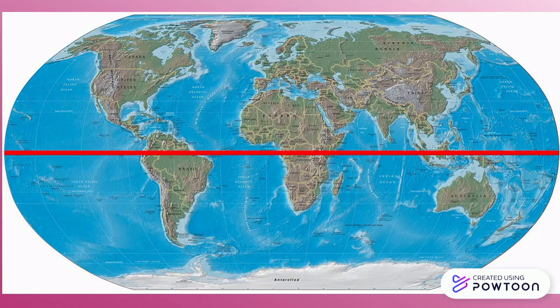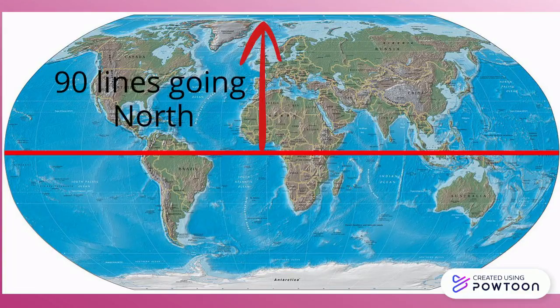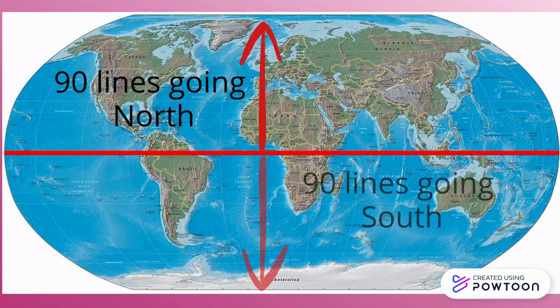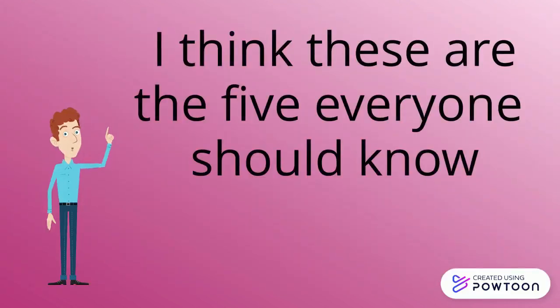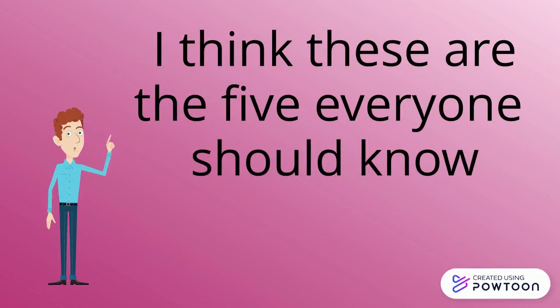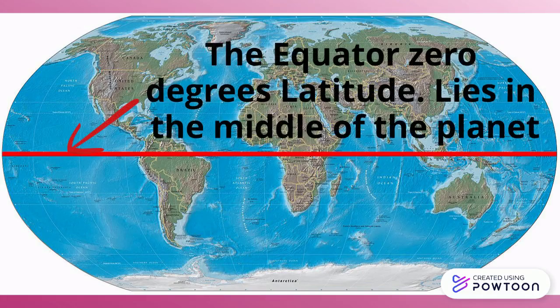Yes, I know there are 90 lines of latitude north and another 90 lines going south. I think these are the five everyone should know. The equator, zero degrees latitude, lies in the middle of the planet.